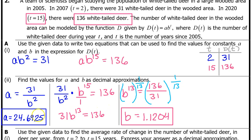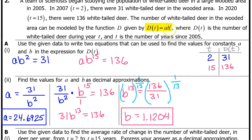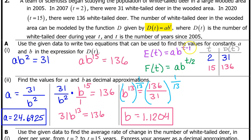Now I'll show you how to find a and b even faster using the regression capabilities of your calculator. The reason I showed the first method is because it always works. The only exponential model programmed into your calculator is a times b to the t power. However, they will often give you models that are slightly different, like a times b to the t minus 1 power or a times b to the t over 2 power — in that case you cannot use exponential regression and must do it by hand.